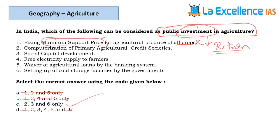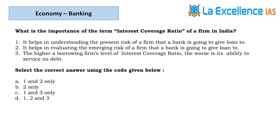Free electricity supply to farmers — this increases production but you get no return, so not an investment. Waiver of agriculture loans — this is support or assurance to farmers, not an investment. Investment is something that gives long-term return; these are incentives or motivations to increase yield.